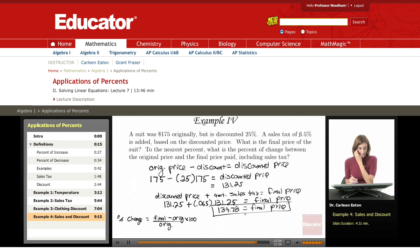So I go back and I look, I have my final price, and I have my original price was $175. So the final price was $139.78 minus the original value, that was $175.